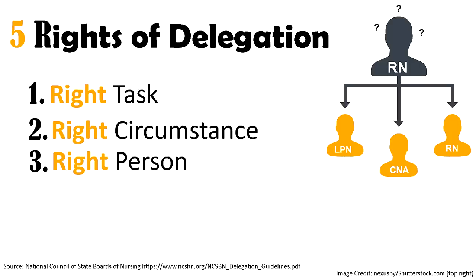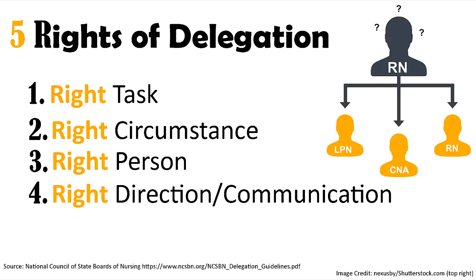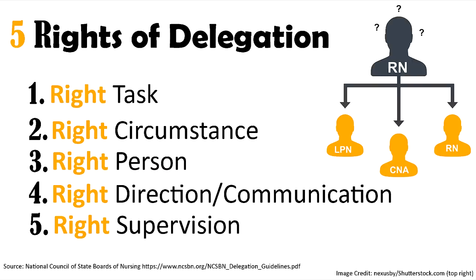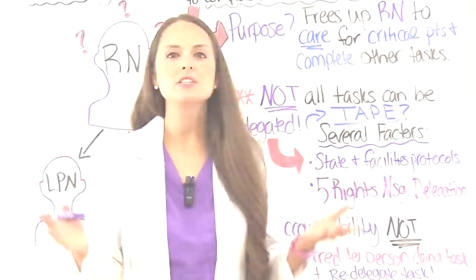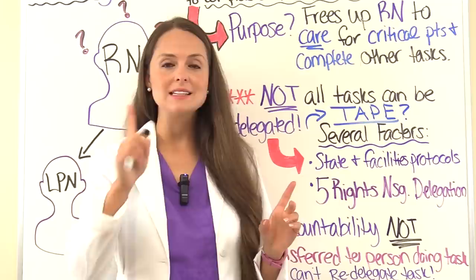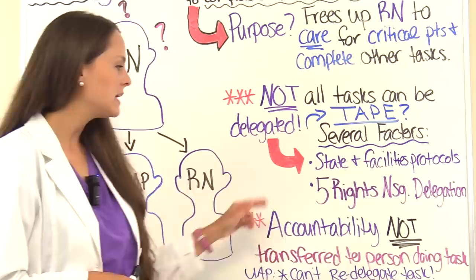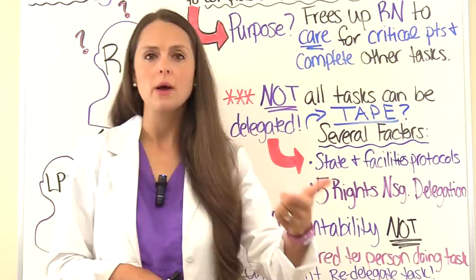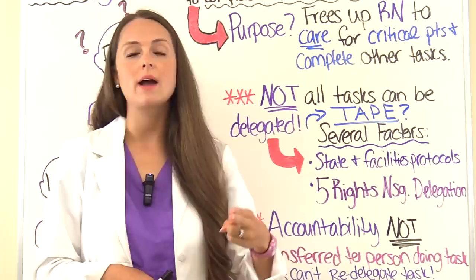The fourth right is right direction and communication. As the RN, make sure you explain in a very clear, straightforward way how to perform the specific task and what the person should expect and report back to you. The fifth right is right supervision — always follow up by evaluating and supervising how the task was completed to ensure it was done properly. As the RN, you are still accountable for that delegated task; accountability is not transferred to the person doing the task for you.